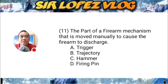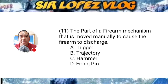Question number eleven: Part of the firearm mechanism that is moved manually to cause the firearm to discharge. A) trigger, B) trajectory, C) hammer, or D) firing pin?